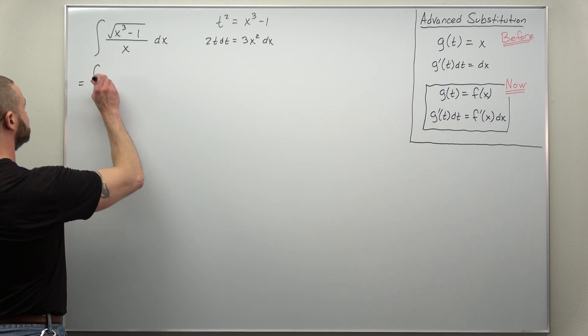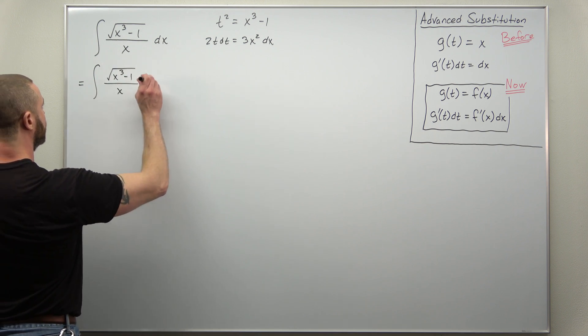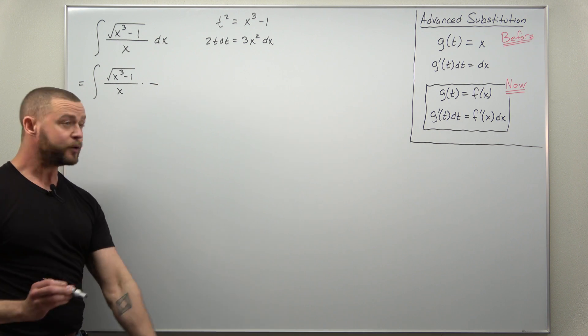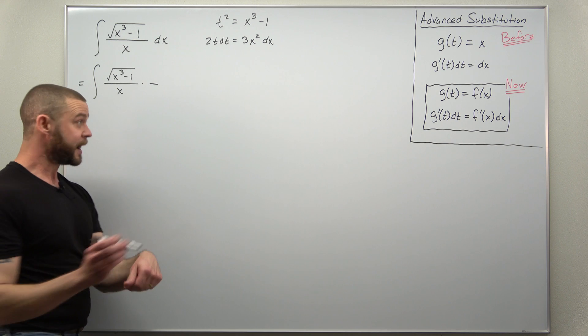So let's do that first. We're going to multiply by 1 choosing 1 as x squared the missing factor divided by x squared.